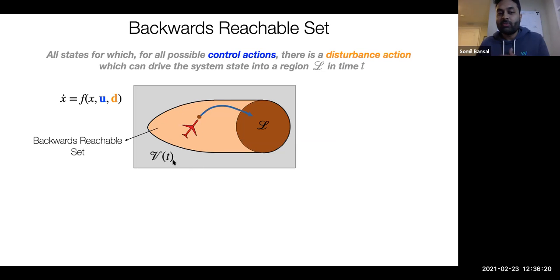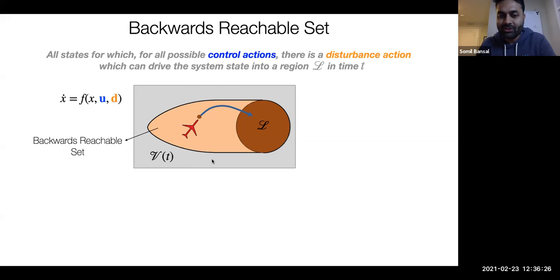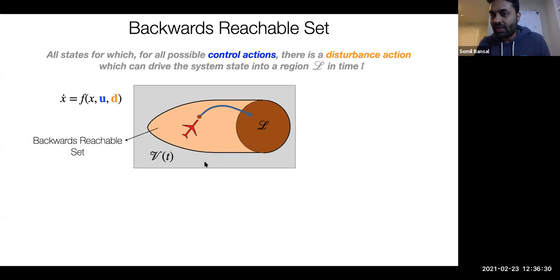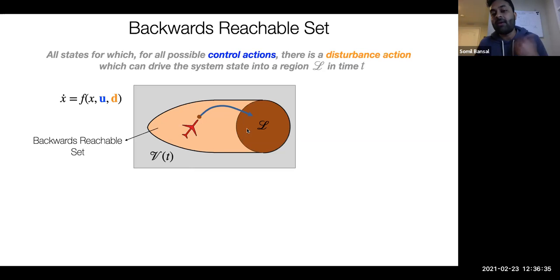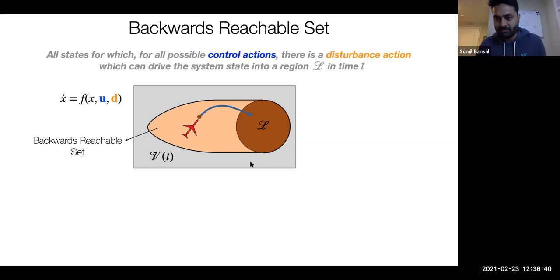Pictorially, if the target region is this dark brown circle — the set of unsafe states — then the backward reachable set is this light orange region. If my aircraft started at this brown dot, then eventually, no matter what control does, the disturbance will be able to push it inside the target region. So the states in the backward reachable set themselves can be unsafe and should be avoided. You can also think about the converse — the gray region — where if the system starts inside it, no matter what disturbance does, we have a control strategy that ensures the system never ends up in the unsafe region.